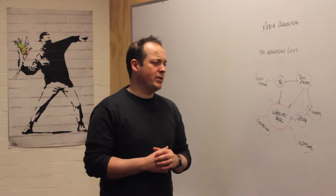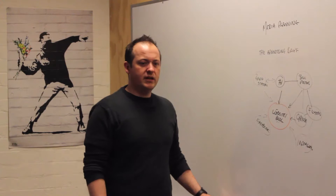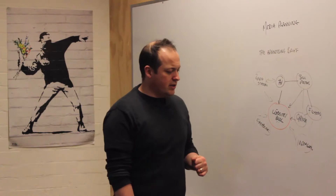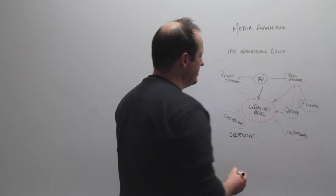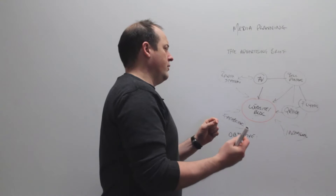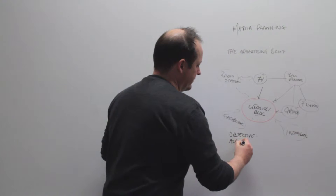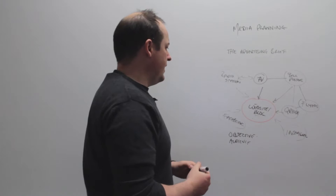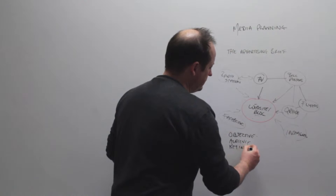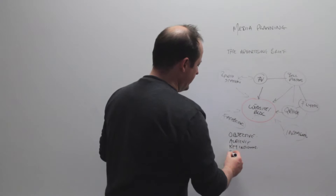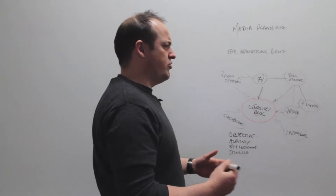There are key components that need to be in the brief, though the amount of detail will vary. First, there needs to be an objective — what do I want to achieve? In this case, the objective is to drive an audience to the website and blog. The next question is who is that audience, what do I want to have happen, where do I want them to go, and what are any specific key insights. What do I want people to get out of this, and what's going to be the stimulus or trigger?